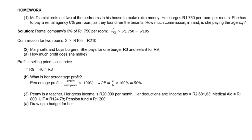Number two: Mary buys and sells burgers. She pays six rand for one burger and sells for nine rand. Her profit is selling price minus cost price, so therefore three rand. Her percentage profit: profit over cost price, so it is three over six times 100, which is 50%.